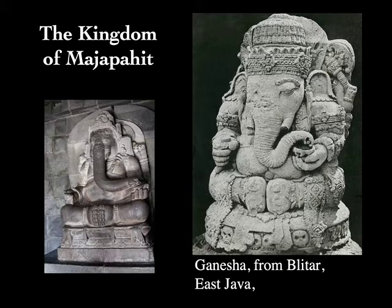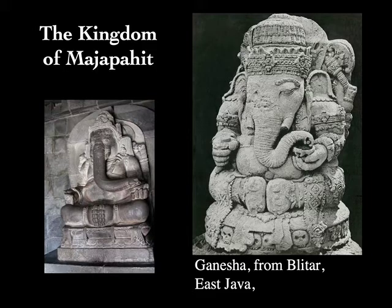Let's look at two examples here. On the right is the Ganesh from Blitar, East Java, and the other is a Ganesh from inside Prambanan. Notice how the one from Prambanan on the left is much more clearly derived from Hindu sources in India, whereas the one on the right, from Blitar, East Java, shows some very interesting innovation taking place.